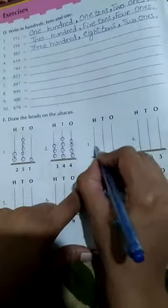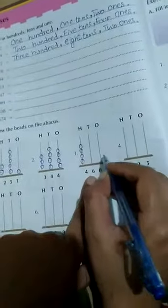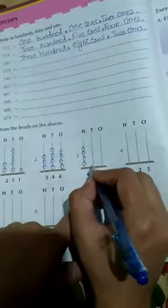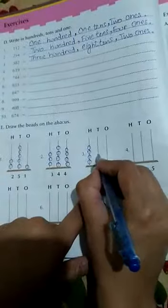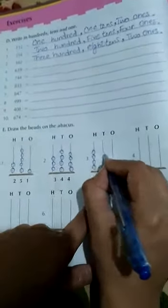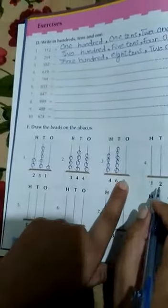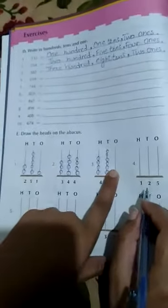Now the next question is hundreds, tens and ones. 460 - four hundreds, one, two, three, four. Six tens - one, two, three, four, five, six. And ones, how many are? Zero. We will make no beads here.